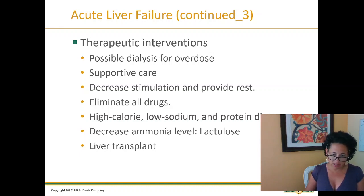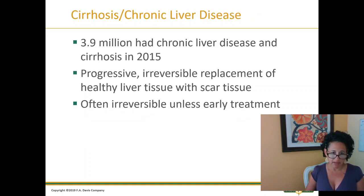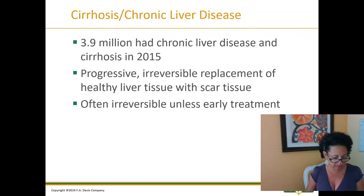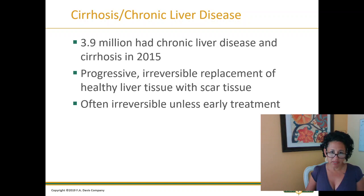You have to eliminate all drugs, maintain a good healthy diet, and possibly pursue a liver transplant. The patient has to be rehabilitated as much as possible to get in shape for transplant, as it is an extensive process. In 2015, 3.9 million people had chronic liver disease and cirrhosis. It can be reversible with early treatment.